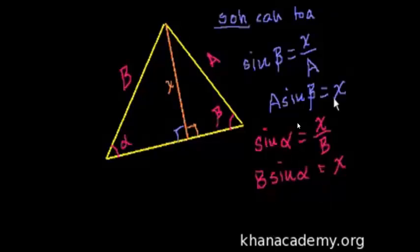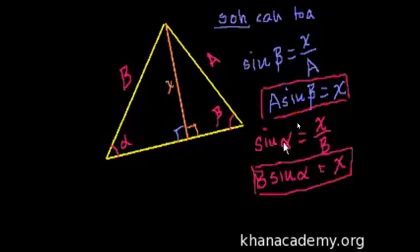So now what do we have? We have two different ways that we solve for this thing that I dropped down from this side, this X. We have A sine of beta is equal to X, and that B sine of alpha is equal to X. Well, if they're both equal to X, then they're both equal to each other.